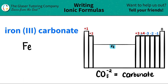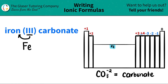Since iron is a transition metal, it has multiple different charges. Which one am I going to use in this case? That's why there's a Roman numeral. The Roman numeral always tells you the charge of the metal. So in this case, iron is going to be a plus three.